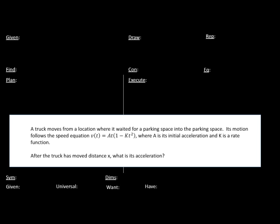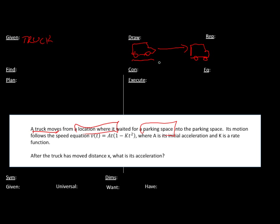Today we're looking at a truck scenario. The truck is going to go from one spot to another — it's waiting for a parking space, and once it sees a parking space open up, it's going to go over into that parking space. And this is the velocity function for that.